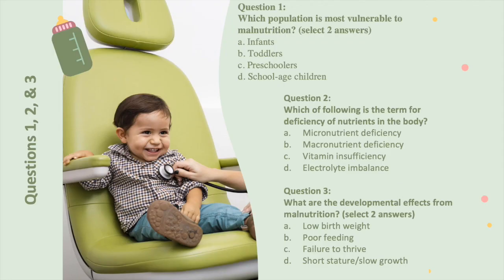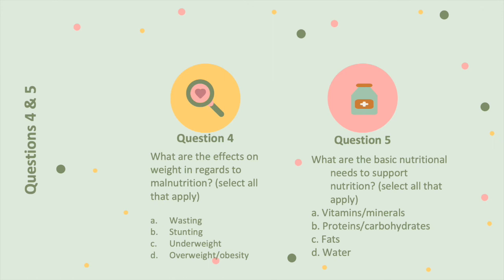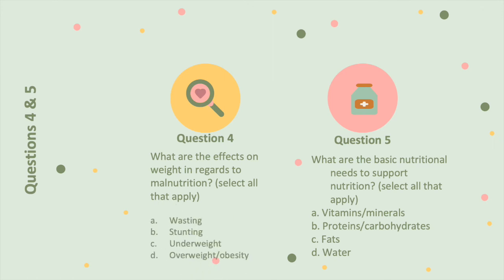We will now go over the answers to the post-test. Question 1: the answer is A and C — infants and preschoolers. Question 2: this term is known as a micronutrient deficiency. Question 3: the developmental effects of malnutrition are failure to thrive and short stature or slow growth. Question 4: all of the above. Question 5: all of the above.